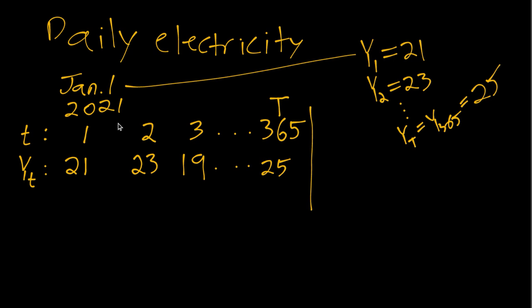And then we can also think about our out of sample values. So even though we don't observe this value in our data we can still talk about big T plus one which would be January 1st 2022. It's just we don't see that in our data. But we might be interested in talking about it because it's something we want to forecast.